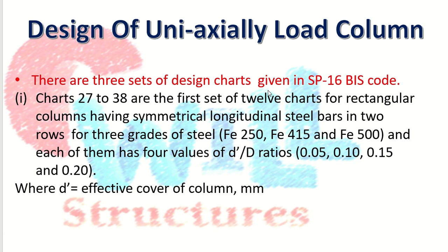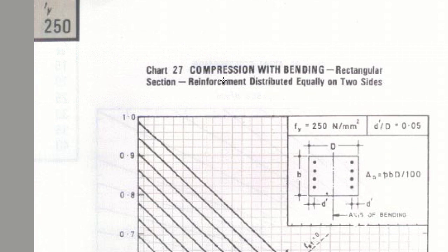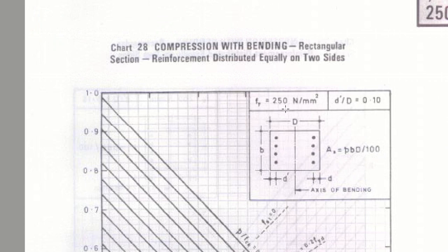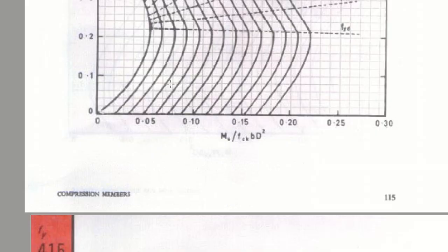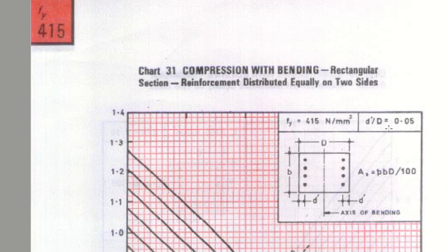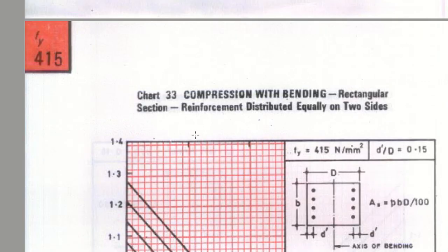Let's see SP16 chart number 27 to 38. Chart number 27 is on page 112 — it is a compression-bending chart for a rectangular section with reinforcement distributed equally on two sides, for FY 250 and d'/d = 0.05. Chart number 28 is for FY 250 and d'/d = 0.1, chart 29 is for FY 250 and d'/d = 0.15, and so on. Each chart has different values of FY and d'/d. Whenever designing a uniaxially loaded column with a rectangular section having reinforcement on only two sides, refer to these charts based on FY and d'/d.